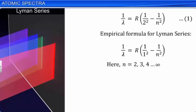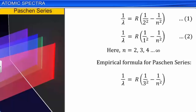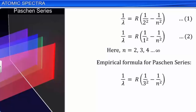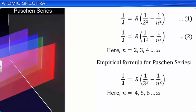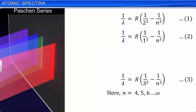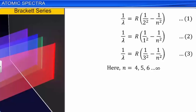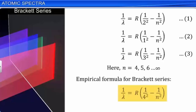The Paschen series has spectral lines which lie in the infrared region. The formula for the Paschen series is 1/λ = R(1/3² − 1/n²), where n = 4, 5, 6, and so on up to infinity — equation 3. The Brackett series also has spectral lines in the infrared region. Its formula is 1/λ = R(1/4² − 1/n²), where n = 5, 6, 7, and so on up to infinity — equation 4. The Pfund series has spectral lines in the infrared region, with formula 1/λ = R(1/5² − 1/n²), where n = 6, 7, 8, and so on up to infinity — equation 5.